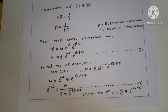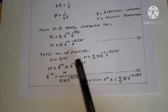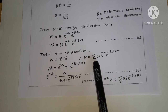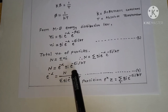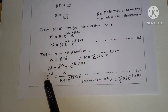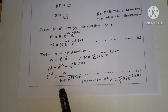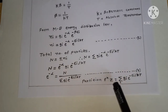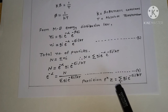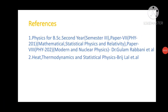From Maxwell-Boltzmann energy distribution law, ni equals gi·e^(minus alpha)·e^(minus beta·ei), so ni equals gi·e^(minus alpha)·e^(minus ei/kT), substituting beta equals 1/(kT) — Equation 6. The total number of particles N equals summation of ni, so e^(minus alpha) equals N divided by summation of gi·e^(minus ei/kT). Here Z, given by summation of gi·e^(minus ei/kT), is called the partition function, as particles are distributed in different energy levels.